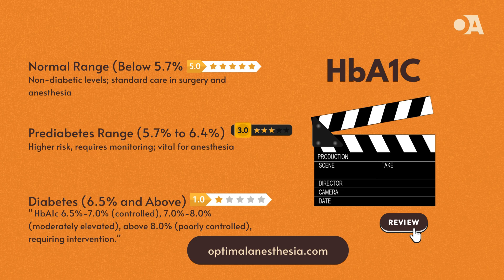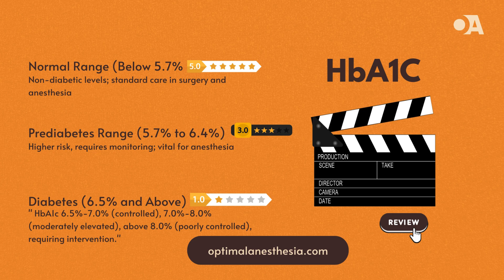HbA1c values of 6.5% and above indicate diabetes, broken down into categories. Controlled diabetes, 6.5% to 7.0%, suggests effective management but still requires ongoing monitoring — anesthesiologists should monitor blood sugar to prevent perioperative spikes or drops. Moderately elevated, 7.0% to 8.0%, indicates a need for better glycemic control, with possible medication or lifestyle adjustments. These patients may require more careful monitoring and preoperative adjustments to their medication or insulin regimen to optimize blood sugar levels before surgery.